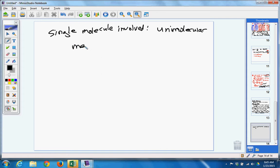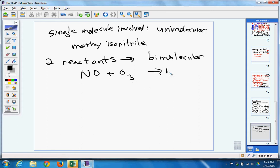So that would be like the methyl isonitrile. There's only one thing there. If I have two reactants, what do you think it's called? Not dye. Bi-molecular. And very rare. So in this case, the NO plus O3, that's bi-molecular.